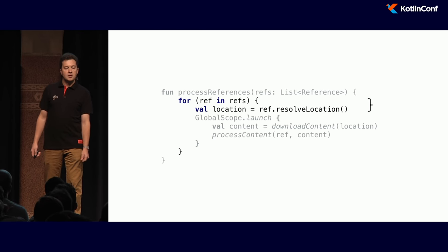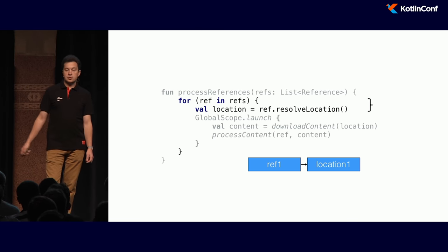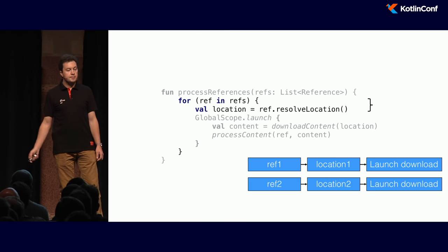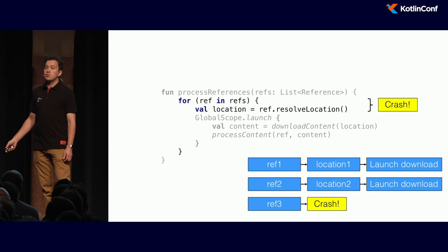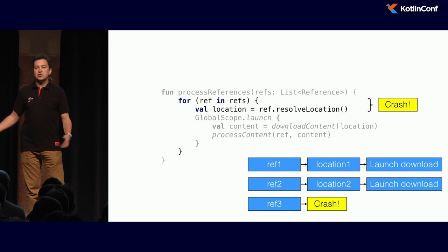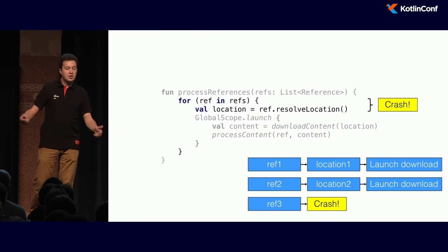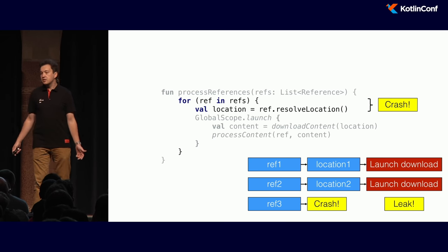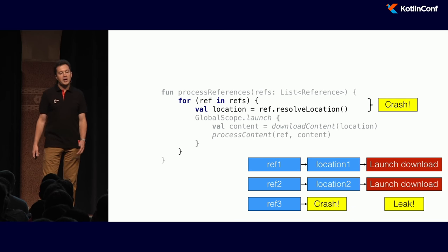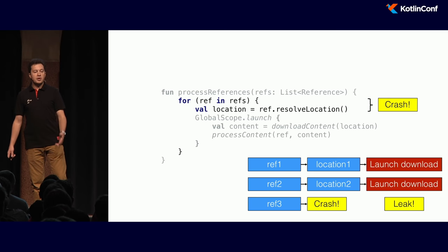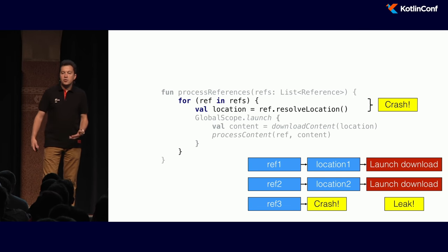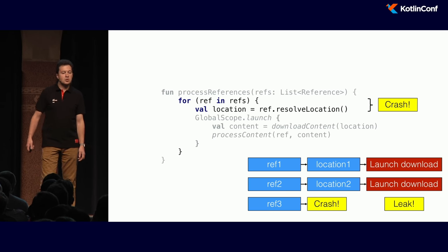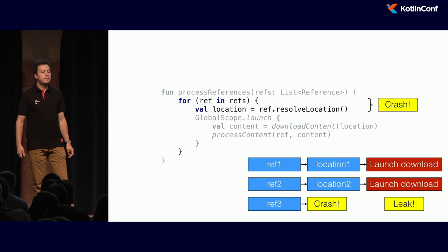To understand what's going wrong, let's take a close look at this loop. We take the first reference, resolve it to the first location, launch download. We take the second reference, resolve it to the second location, launch download. We take the third one — and then what happens if it crashes? Some bug, wrong reference, something not found — it's a crash. The whole `processReferences` aborts. Now all the coroutines already launched are still there, working, doing their thing. They have leaked from our procedure. In reliable code we catch the exception and retry, leaking more coroutines each time. Even though coroutines are cheap, we may have an unlimited number of leaked coroutines running underground. We'll ultimately run out of resources. Leaks are something we don't want.